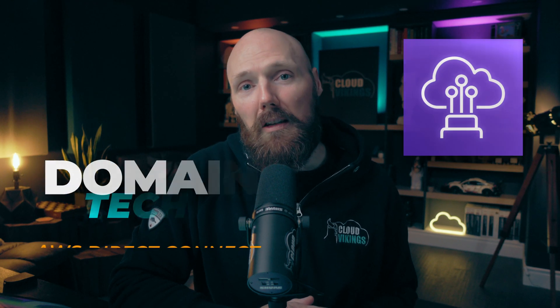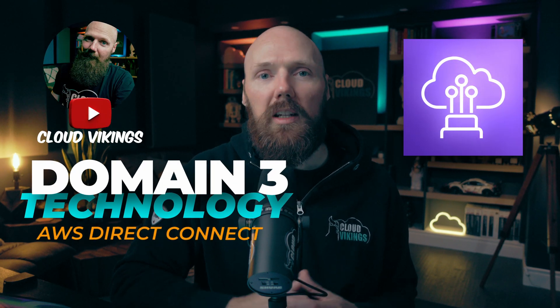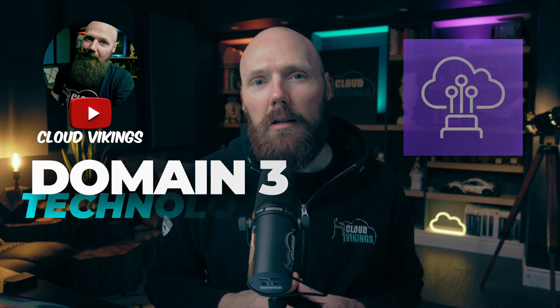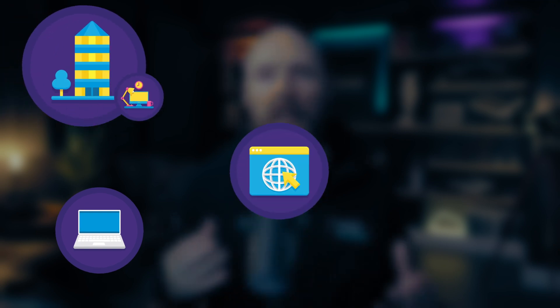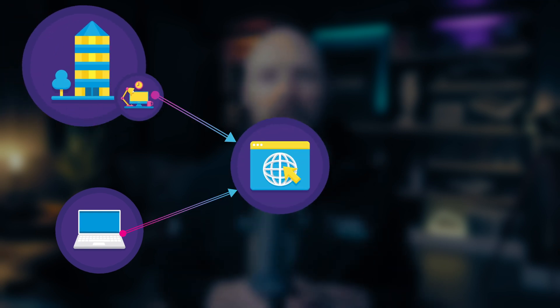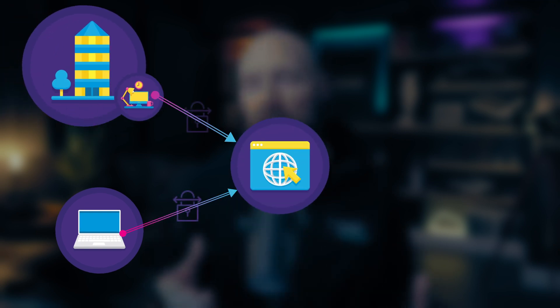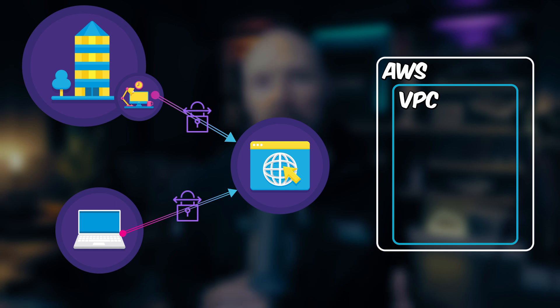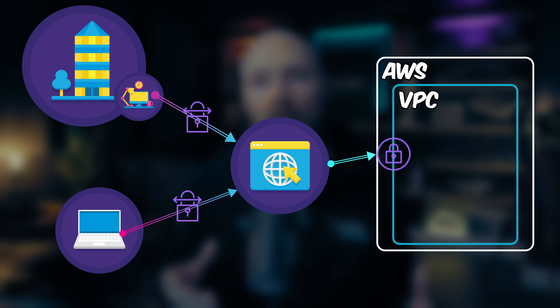Welcome back. In this lesson, we'll be looking at another network connectivity option with AWS called Direct Connect. We looked at the AWS VPN and how it enables us to create secure ways to connect different networks or even end user systems to AWS by using the public internet through a VPN tunnel.